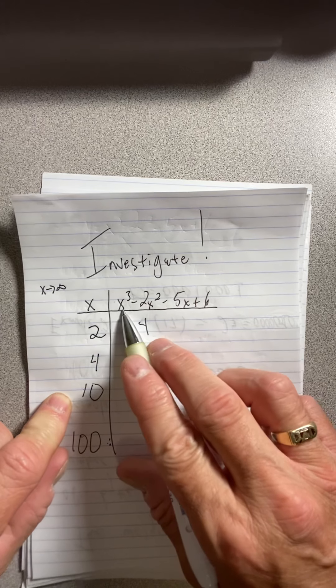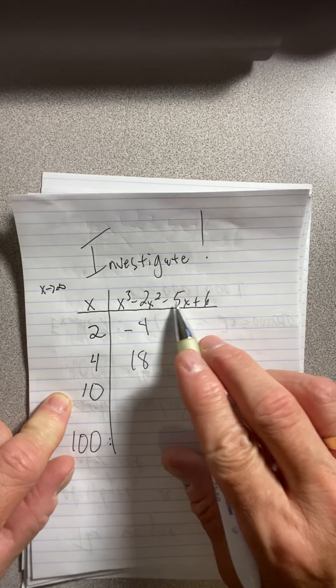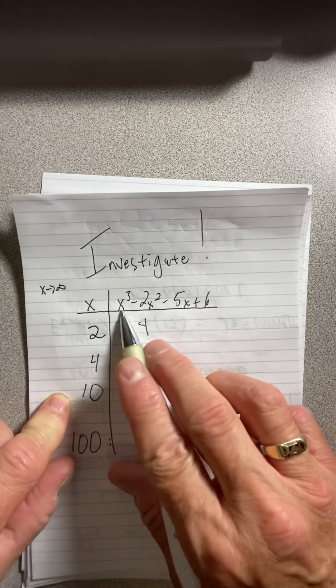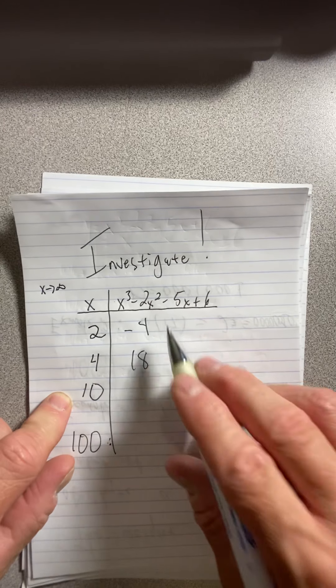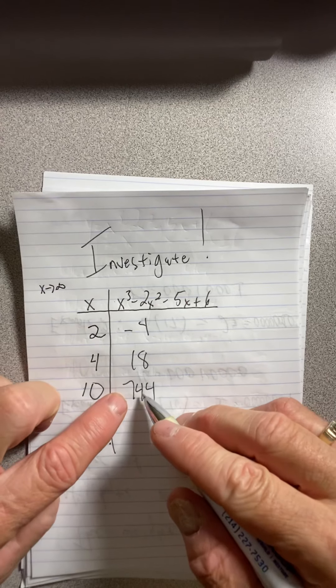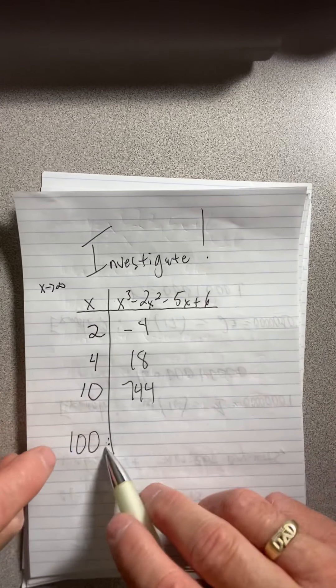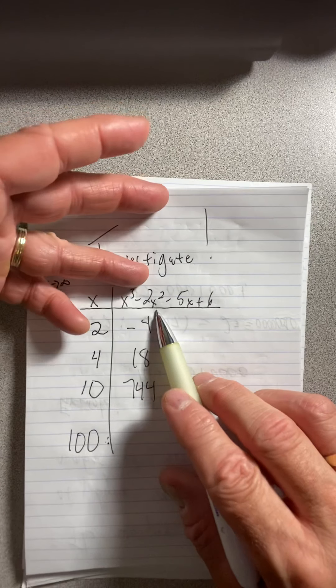Put in 10. What are we going to get? That's going to be big. 10 cubed is in the thousands. If I square it, it's only in the hundreds. So I have 1,000 minus 200 minus 50 plus 6. That's meaningless. So it's 1,000 minus 200. So we're in the 800s, back up 50. So we're in the 700s, and it's 744, I think. But the thing is, you're up in the hundreds. You're near 1,000.